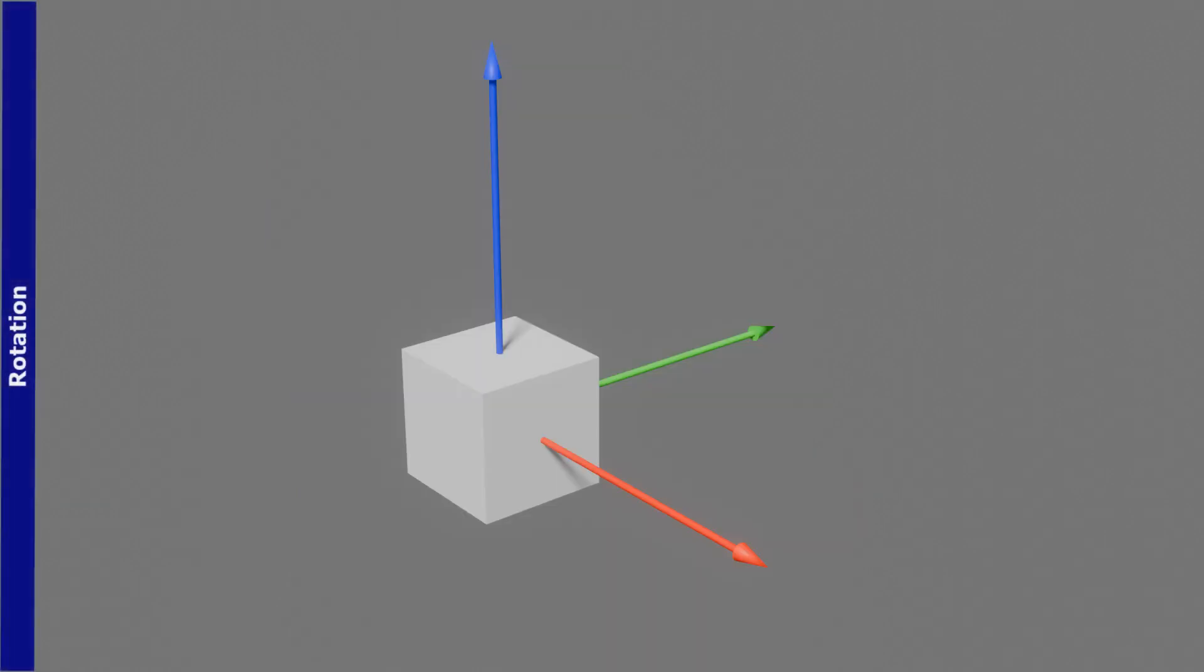Now let's talk about rotation. Rotation is defined as turning an object around a point or axis. We use the symbol r to denote rotation. The object can rotate in the x-axis, y-axis, and z-axis.